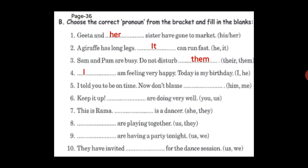'I told you to be on time — now don't blame dash' — talking about myself, so 'don't blame me'. 'Keep it up — dash are doing very well' — note: never start a sentence with 'us', so 'you are doing very well'. 'This is Rama — she is a dancer.' 'Dash are playing together' — 'they are playing together'. 'Dash are having a party tonight' — 'we' never starts a sentence, so 'we are having a party tonight'. 'They have invited dash for the dance session' — 'they have invited us'.